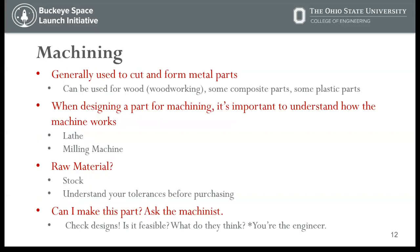Now we're going to talk about manufacturing — specifically two common ways. The first is traditional machining, usually used to cut and form metal parts, though it can be used for wood, some composite parts, and some plastics. When designing a part for machining, it's important to understand how the machine works, how it makes cuts, and how you actually fit your part onto the machine. Keep it simple and avoid making things that aren't feasible. Two common machines are the lathe and the milling machine.